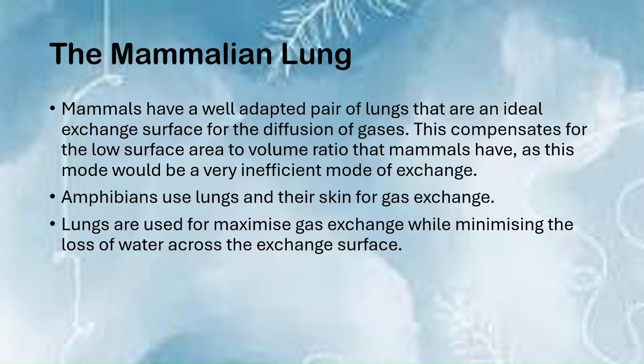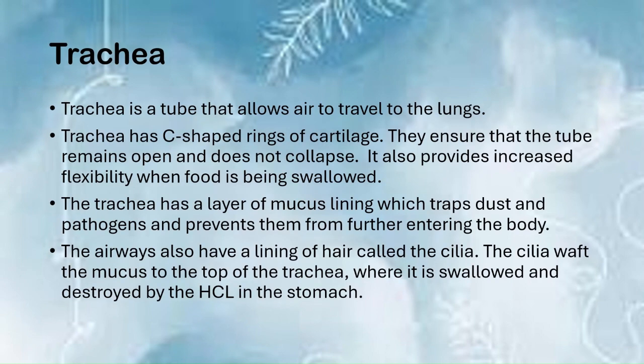Mammals have a well-adapted pair of lungs that serve as an ideal exchange surface for gas diffusion. This compensates for the low surface area to volume ratio that mammals have, since relying solely on body surface diffusion would be very inefficient. Amphibians use both lungs and skin for gas exchange, while in water they rely on their skin. Lungs are adapted to maximize gas exchange while minimizing the loss of water across the exchange surface.